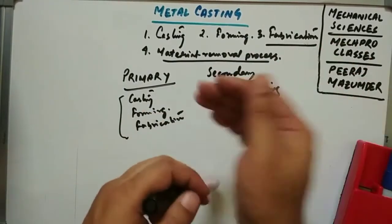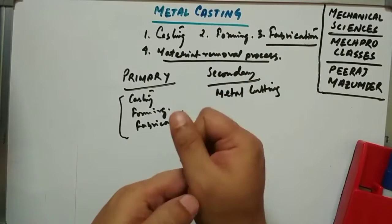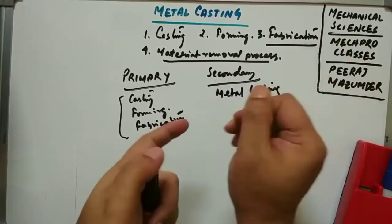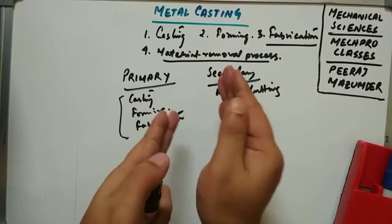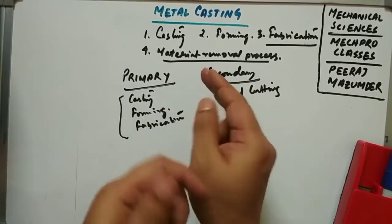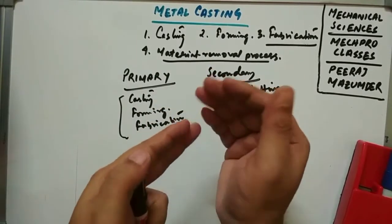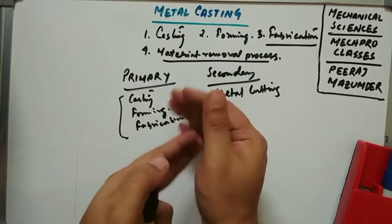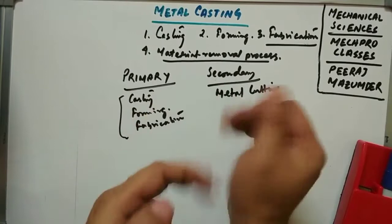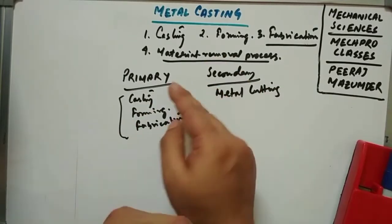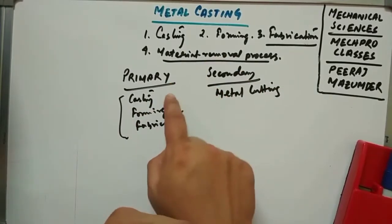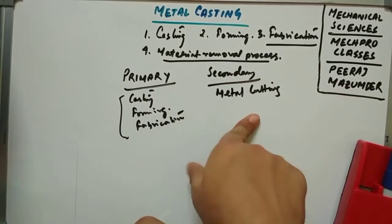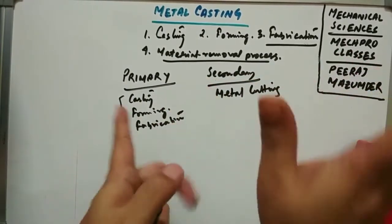Now, in the new syllabus of Mechanical Sciences, they have combined both primary and secondary processes into a single semester. Previously it was divided into two semesters. So we will be learning casting, forming, fabrication processes, as well as metal cutting processes, all in a single semester.